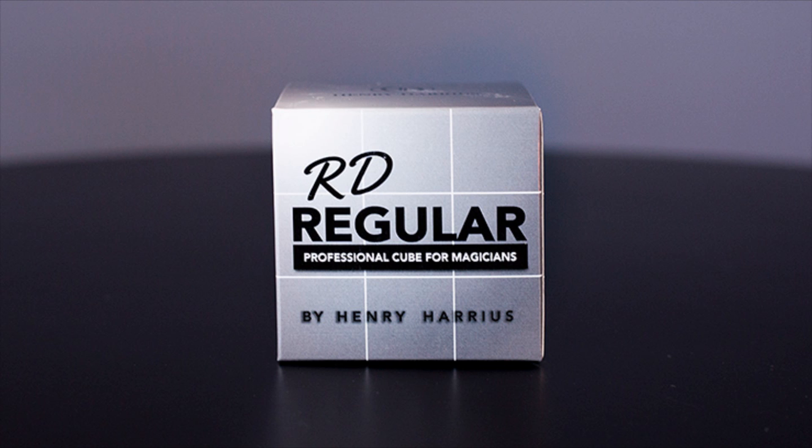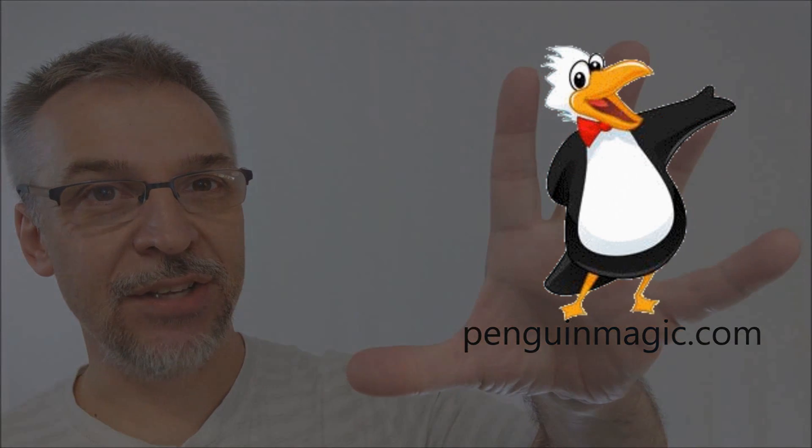All right, so that's pretty much everything I can say about the RD cube from Henry Harris. Available right now at your favorite magic retailer for about $10. It's a good replacement cube for your cube magic tricks, especially if you already do Rubik's Dream or Rubik's Dream 360. Like I said, I got mine at penguinmagic.com and I would suggest you head there as well. Thanks. Bye.